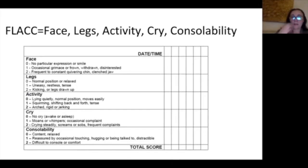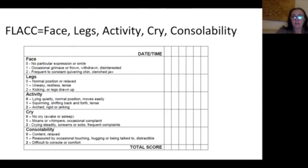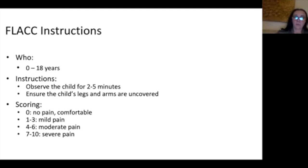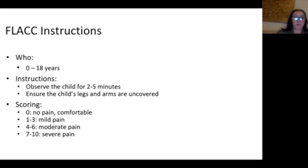The FLACC scale is for kids zero to 18. FLACC stands for Face, Legs, Activity, Cry, and Consolability. You watch the child and give them a score based on these criteria. Remember, difficult to console or comfort can indicate pain more so than a child who's content and relaxed. You have to watch the child for a few minutes with legs and arms uncovered. A score of zero means no pain; one to three is mild pain; four to six is moderate; and seven to 10 is severe.